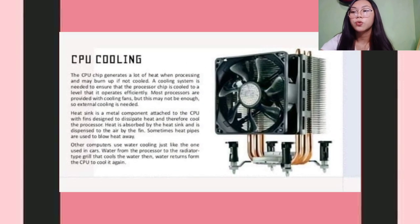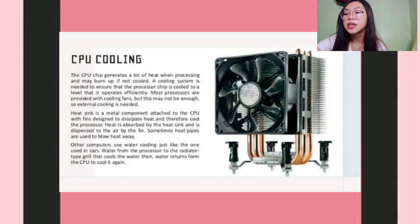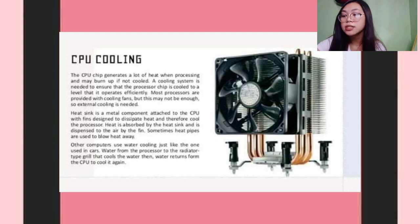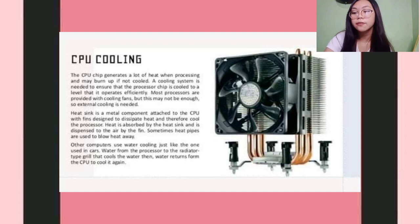And lastly is CPU Cooling. The CPU chip generates a lot of heat when processing and may burn up if not cooled. A cooling system is needed to ensure that the processor chip is cooled to a level that it operates efficiently. Most processors are provided with cooling fans, but this may not be enough so external cooling is needed. A heat sink is a metal component attached to the CPU with fins designed to dissipate heat and cool the processor. Heat is absorbed by the heat sink and dispersed to the air by the fins. Sometimes heat pipes are used to blow heat away, and other computers use water cooling — water flows from the processor to a radiator-type wheel that cools the water, then water returns to the CPU to cool it again.